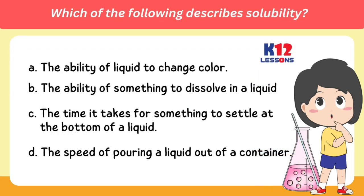Which of the following describes solubility? A. The ability of liquid to change color. B. The ability of something to dissolve in a liquid. C. The time it takes for something to settle at the bottom of a liquid. D. The speed of pouring a liquid out of a container.